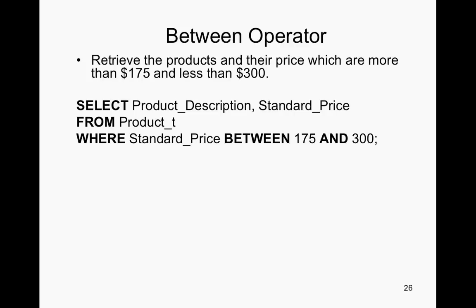Here's the BETWEEN clause. To retrieve the products and their price which are more than $175 and less than $300 — so $176 to $299 — you'd SELECT product description, standard price FROM product table WHERE standard price BETWEEN $175 AND $300. These keywords BETWEEN and AND are bolded because they need to be in there or the query won't know you want values between those amounts.